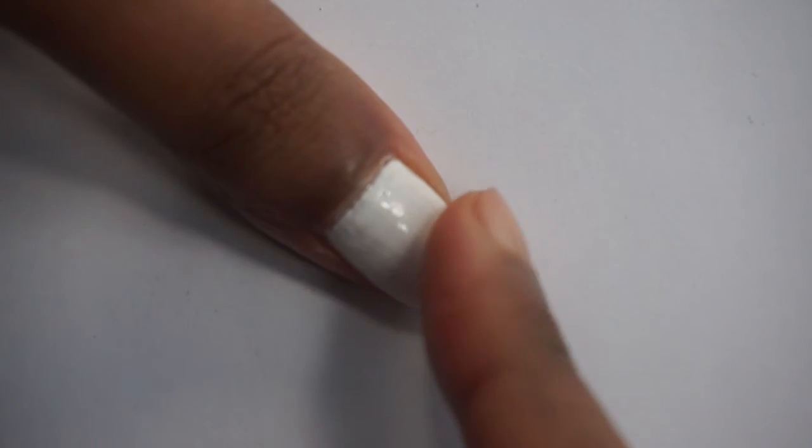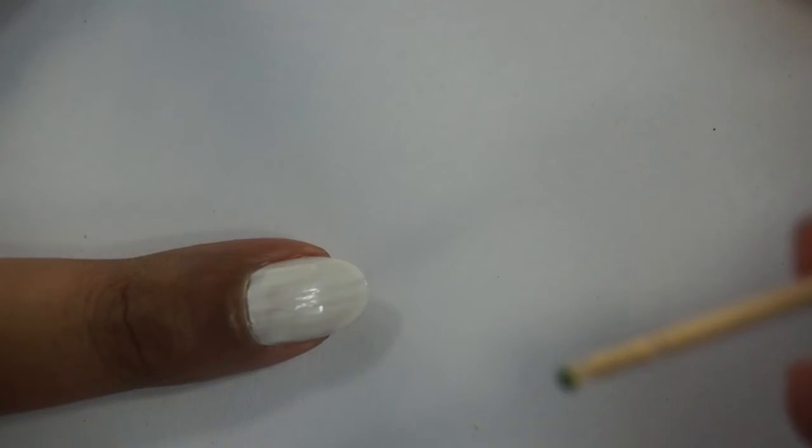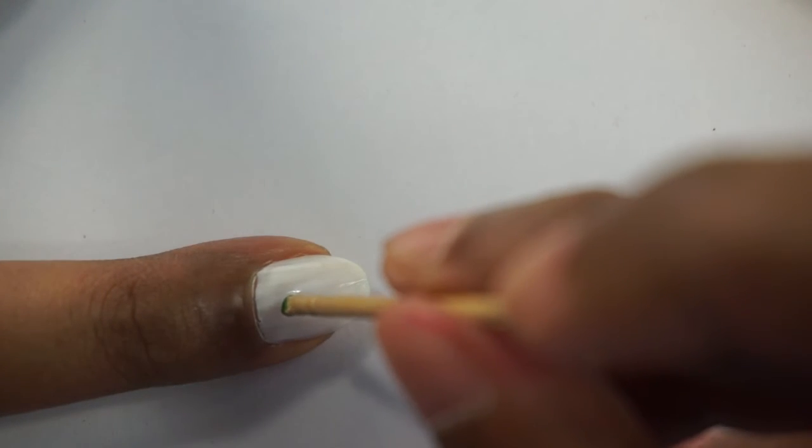Apply white nail polish to the nail and let it completely dry. Using a dark green nail polish and a toothpick, create a tree with a stippling motion.